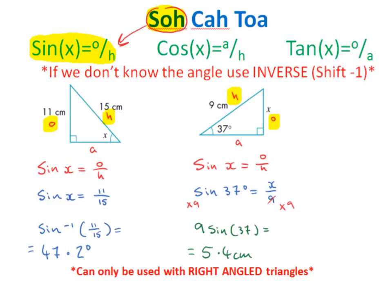Before we look at a couple of examples, it's very important to note that if we don't know the angle, we use the inverse, which is the shift minus 1 function. In the first example, we have a right-angled triangle where the angle is x, so we don't know the angle and will have to use this inverse function. But in the second example, we do know the angle — it's 37 degrees — whereas x is one of the sides, so we won't use the inverse function.